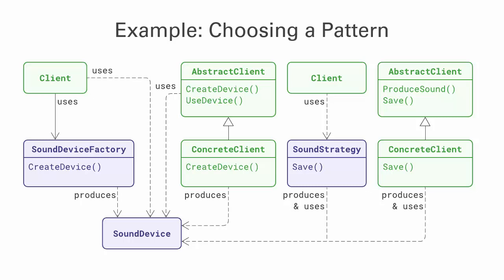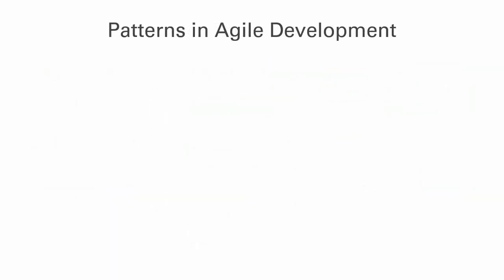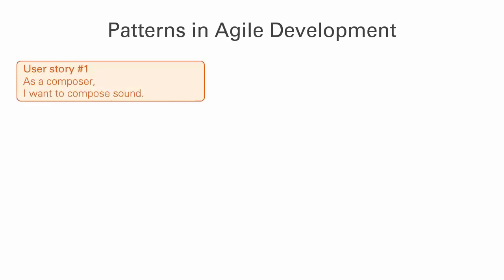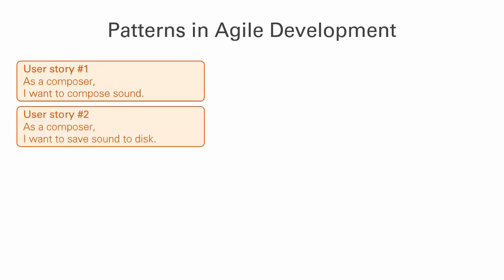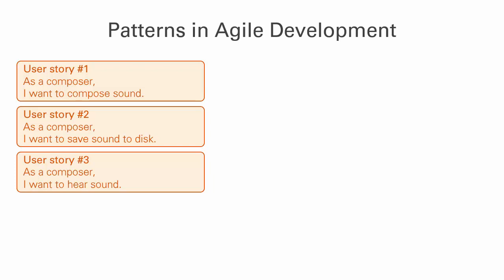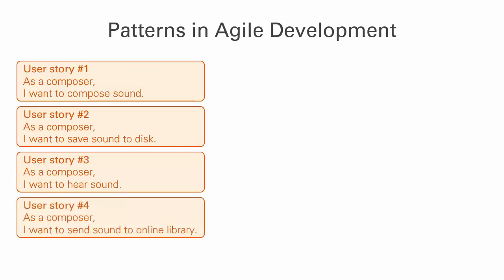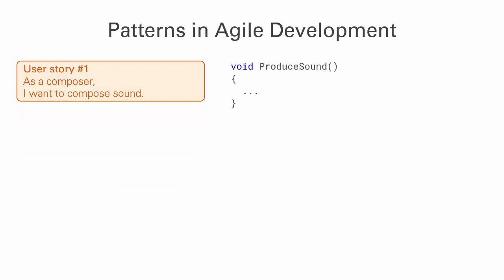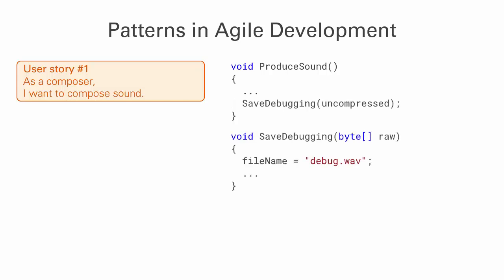There's no need to rush with design patterns. Just don't begin with them — begin with real behavior. Listen to requirements. If you are practicing agile development, this part will come even easier to you. Read the user stories: 'As a composer, I want to be able to compose sound.' 'As a composer, I want to save my sound to disk.' 'I want to hear my sound.' 'I want to send my sound to online library.' The variation — there it comes, but only after. Your initial design will let that composer produce sound. You might save it to disk for debugging purposes, maybe as an uncompressed byte stream — not useful for real musicians, honestly.